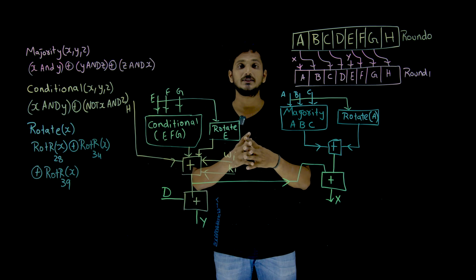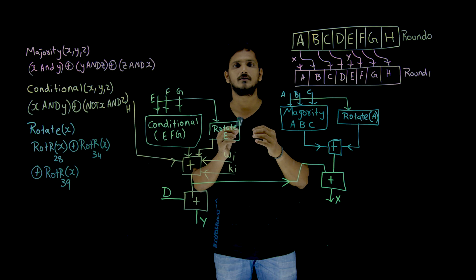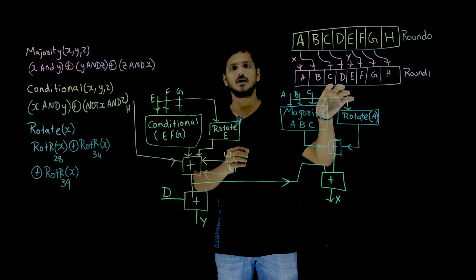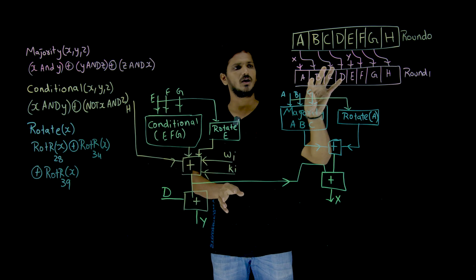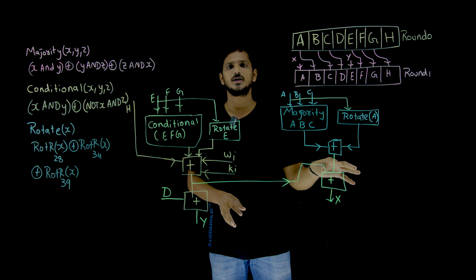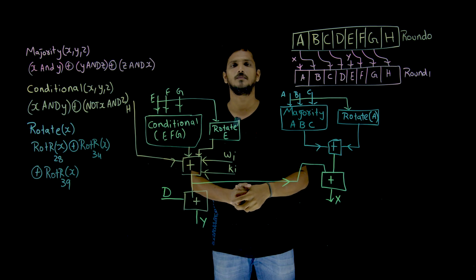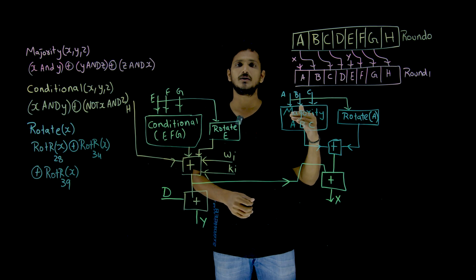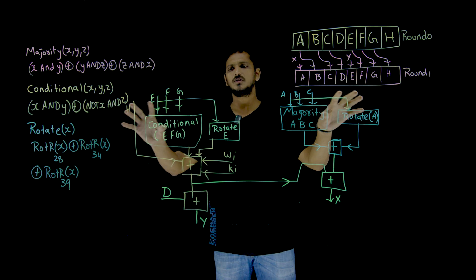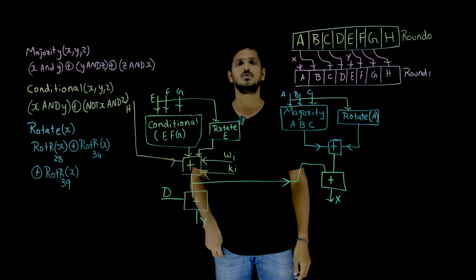So this is what happens inside each rotation. Again, this round 1 is going to do again the same thing and it is sent to the output as round 2. Like that, how many rounds happen? 80 rounds are there. In each round, this is the function which we are going to do.